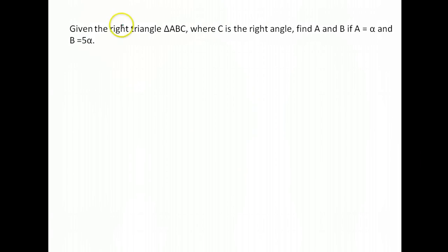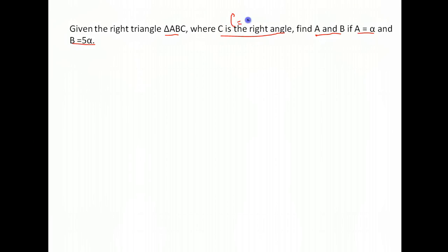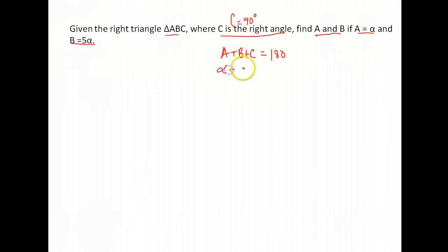This one takes another step. We have triangle ABC again, and C is a right angle. We're asked to find A and B where A is alpha and B is 5 alpha. Since C is a right angle, its measure is 90 degrees. So A plus B plus C equals 180 — angle A is alpha, angle B is 5 alpha, and angle C is 90.